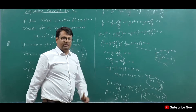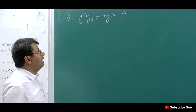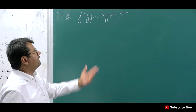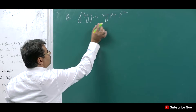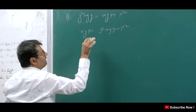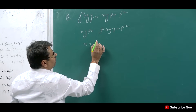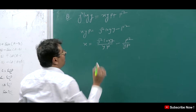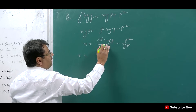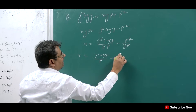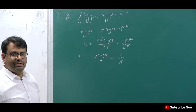Let's solve the last question. The equation is y² log P = XYP + P². Here we can see that Y appears 2 times but X appears 1 time. So if X is 1 time, then it will be Solvable for X. We rearrange to get XYP = y² log Y − P², so X = y log Y / P − P/Y.